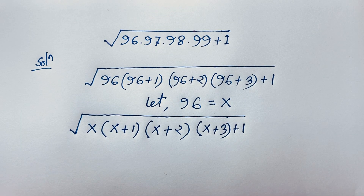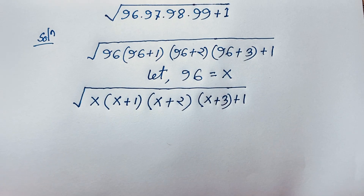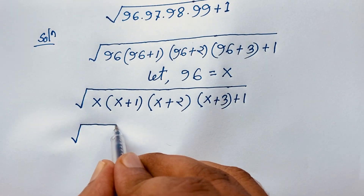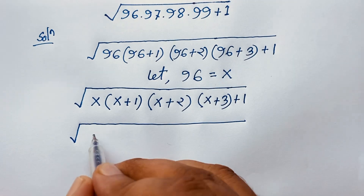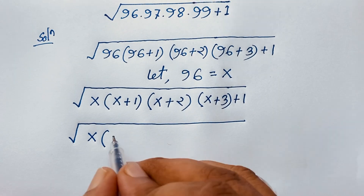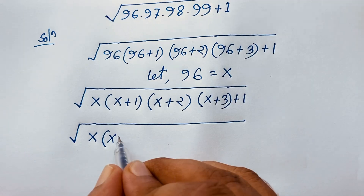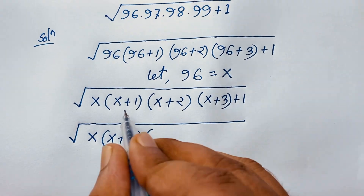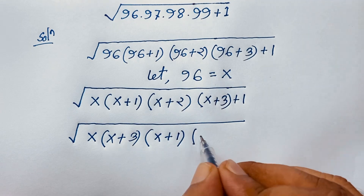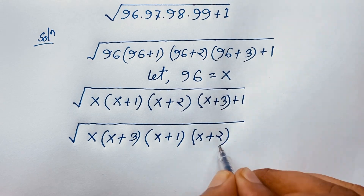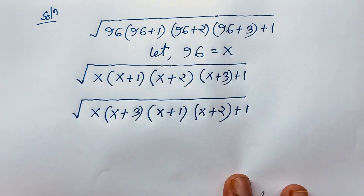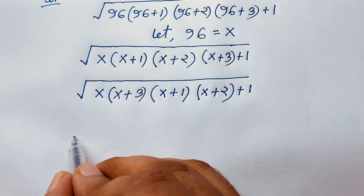Now under the square root, I rearrange the factors. I take x times (x+3) together, and (x+1) times (x+2) together, and then add 1.